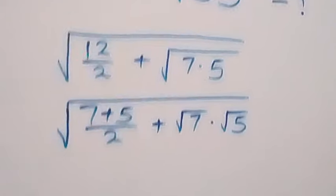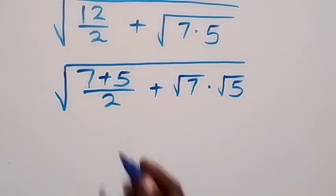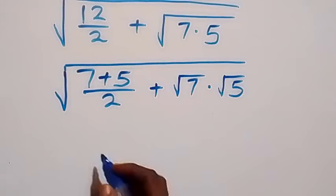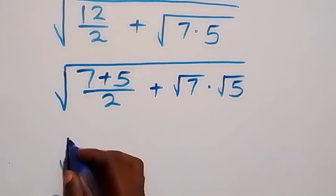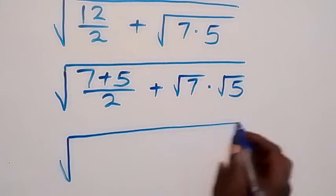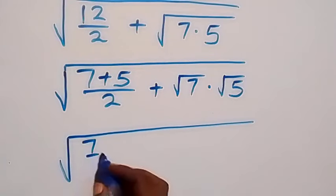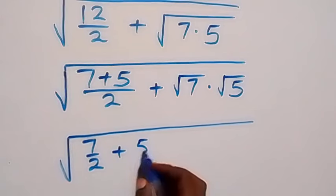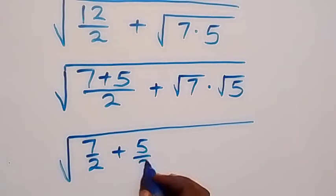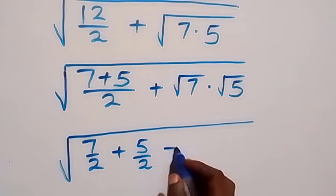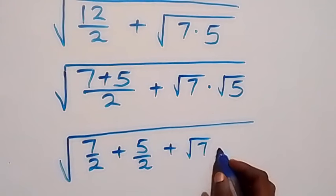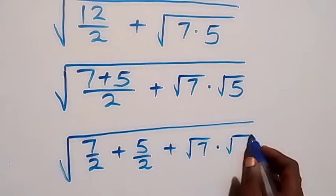In the next step, this fraction here we can split it into 2, and this becomes square root of 7 over 2 plus 5 over 2, then plus root 7 times root 5.